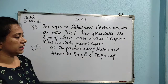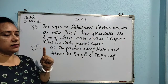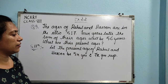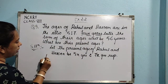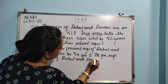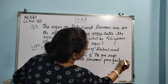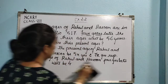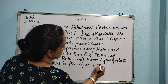Rahul's age is 5x years and Haroon's age is 7x years. Now, four years later means after four years. For example, if your age is 14 years, after two years your age will be 14 plus 2. So the age of Rahul four years later will be 5x plus 4 years and Haroon's will be 7x plus 4 years respectively.